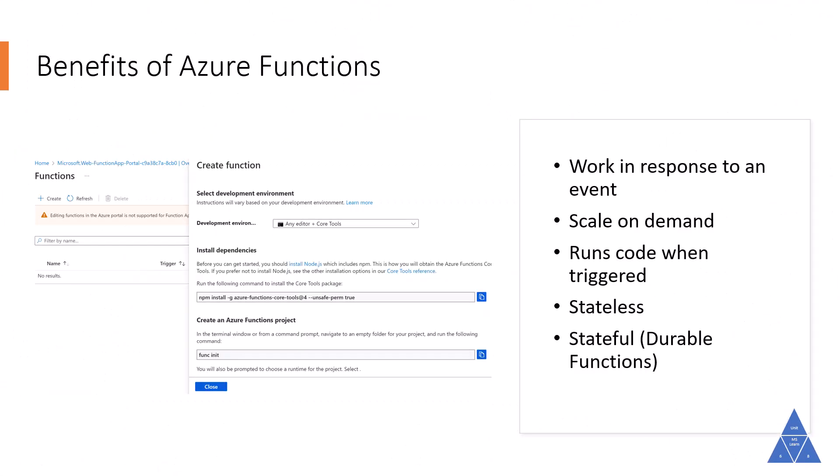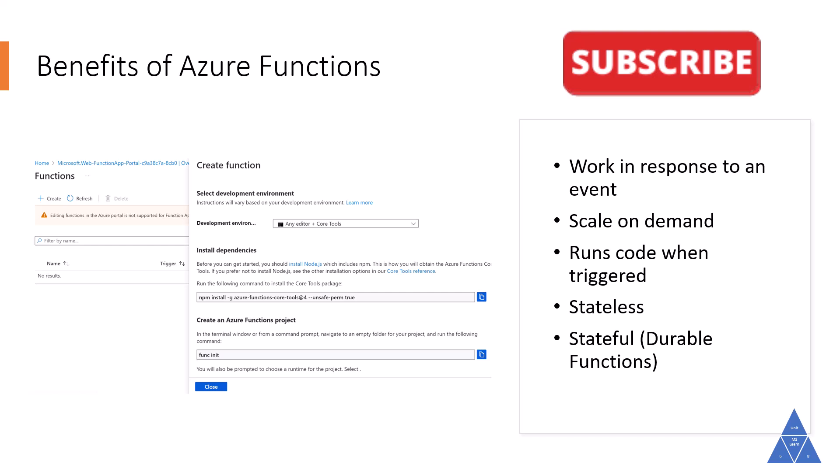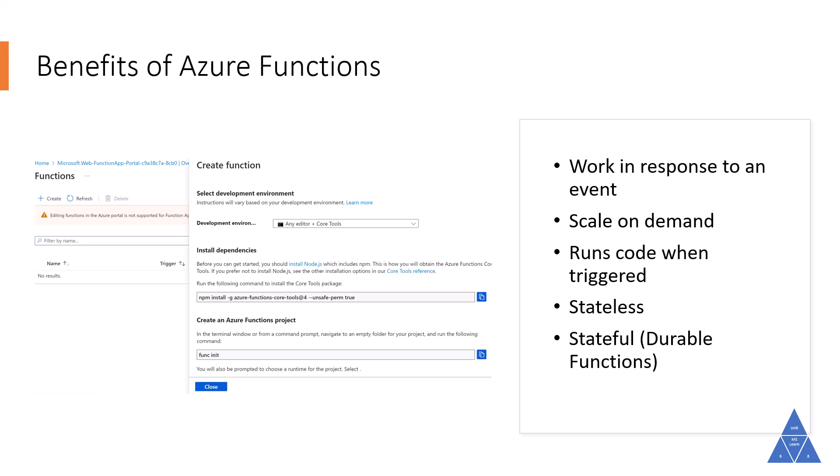Azure Functions is ideal when you're only concerned about the code running your service and not the underlying platform or infrastructure. Use Azure Functions to perform work in response to an event — often via a REST request, which sends a message to a server, a timer, or a message from another Azure service — when that work can be completed quickly, within seconds or less. Functions scale automatically based on demand, which may be a good choice when demand is variable. Azure Functions run your code when triggered, and when the function finishes, it automatically deallocates resources. This model only charges you for the CPU time used while your function runs.